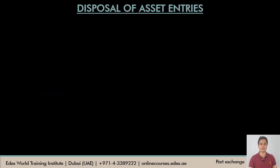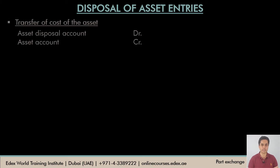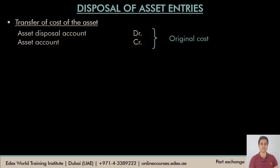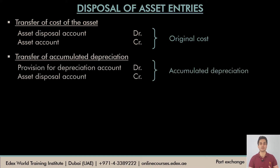Let's quickly revise the entries to be passed at the time of disposal of an asset. The first entry is the transfer of cost of the asset from the asset account to the asset disposal account — we debit the asset disposal account and credit the asset account with the original cost. The second entry is the transfer of the provision or accumulated depreciation on the asset sold to the asset disposal account — we debit the provision for depreciation account and credit the asset disposal account with the accumulated depreciation on the asset till date.